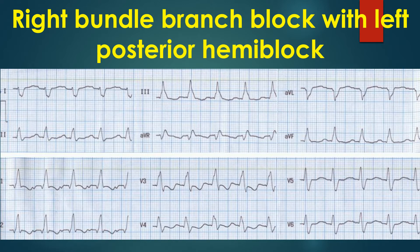This combination is one type of bifascicular block. The PR interval is borderline at 200 ms. If the PR interval is prolonged in this combination, it becomes trifascicular block.